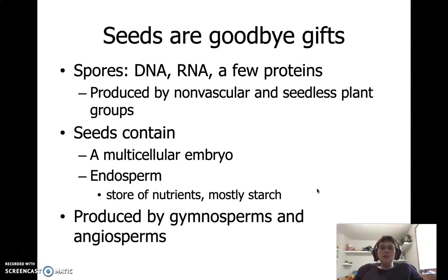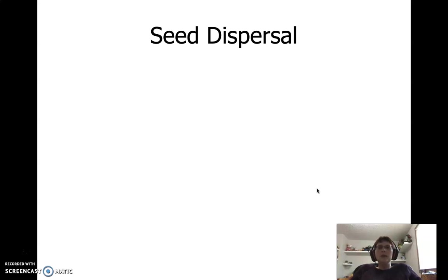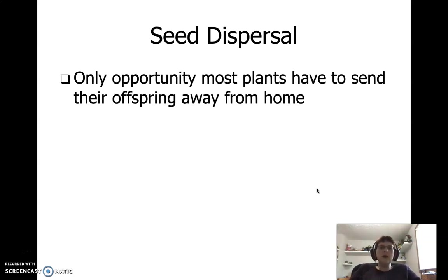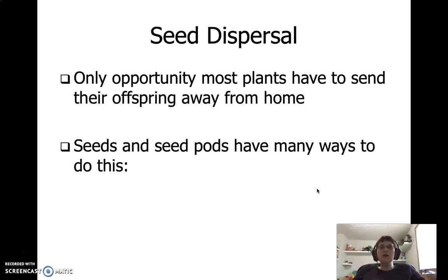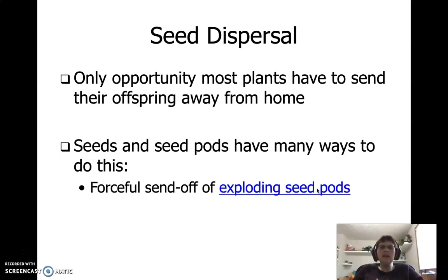Seeds are produced only by gymnosperms and angiosperms, and they allow these plants to move to new areas that the non-vascular and vascular seedless plants hadn't been able to get to before. A big advantage of seeds is that they allow dispersal. Gymnosperms and angiosperms have different ways of doing this — they don't necessarily all rely on wind like spores do. Spores had to be moved by wind because that's the only way they could get away from their parent plant, but for angiosperms and gymnosperms, seeds and seed pods have lots of ways to get away from the parent plant.